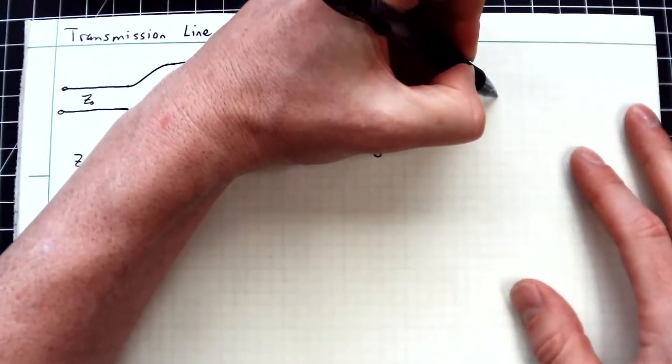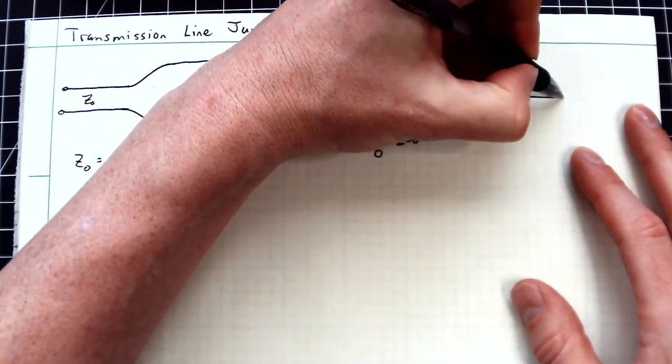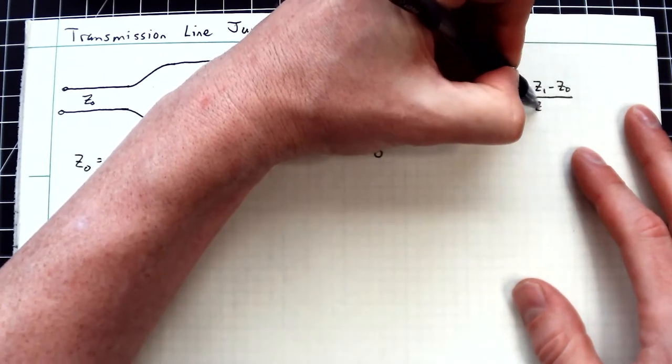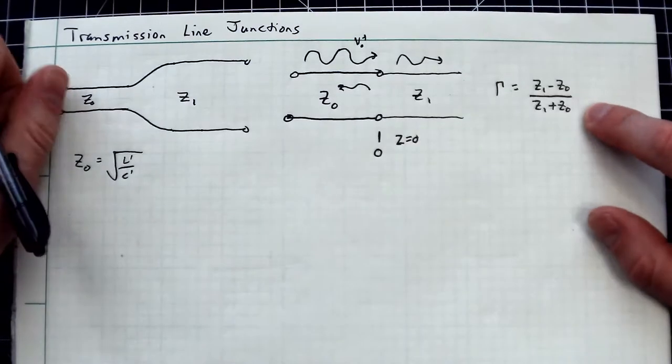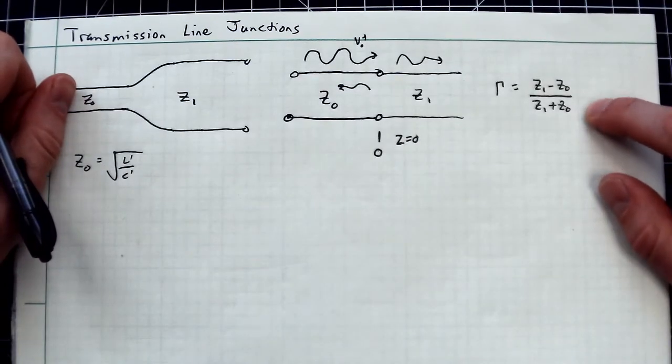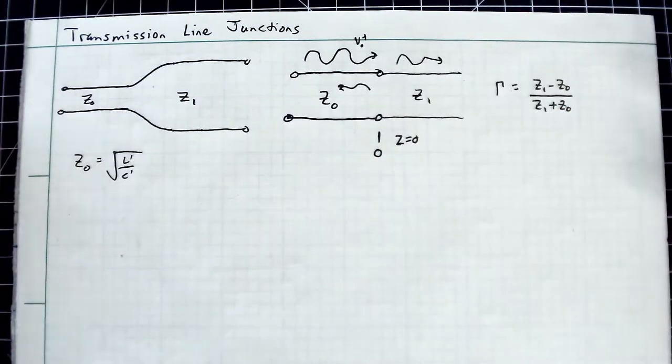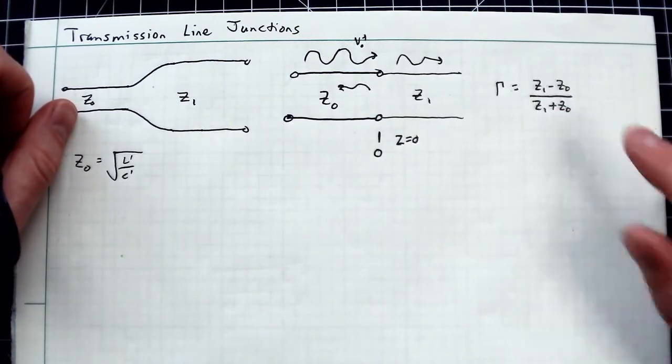You get a reflection coefficient γ, which is Z₁ minus Z₀ over Z₁ plus Z₀. You notice it looks exactly like the same reflection coefficient for a lumped load. The derivation is straightforward, so we're just skipping to the end here.